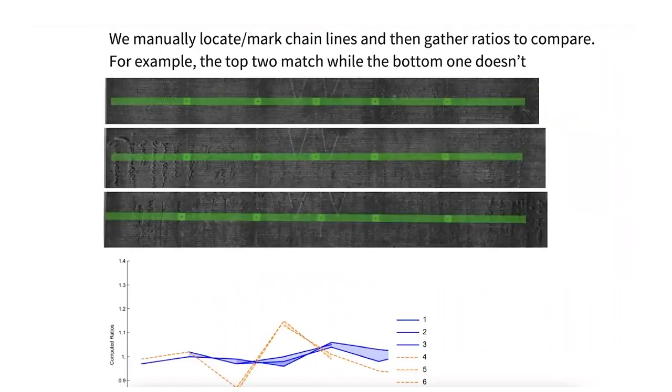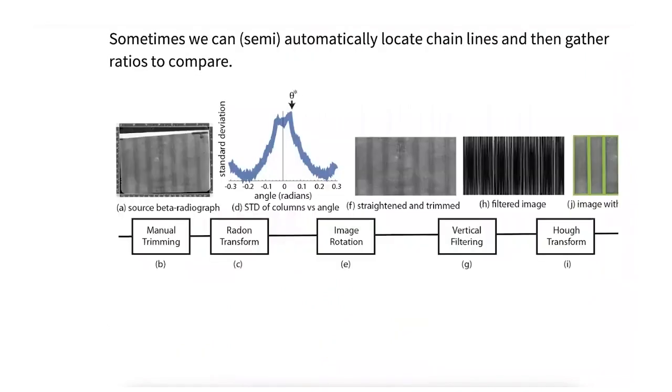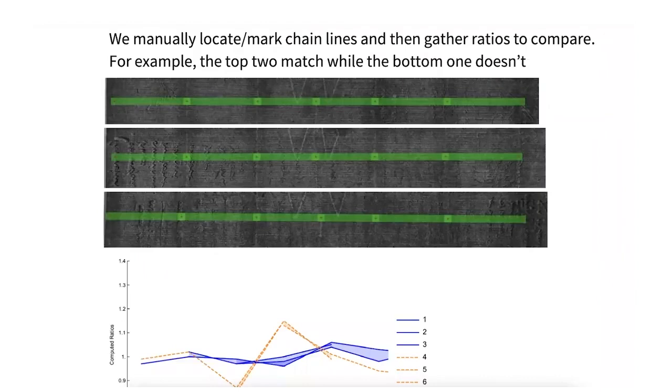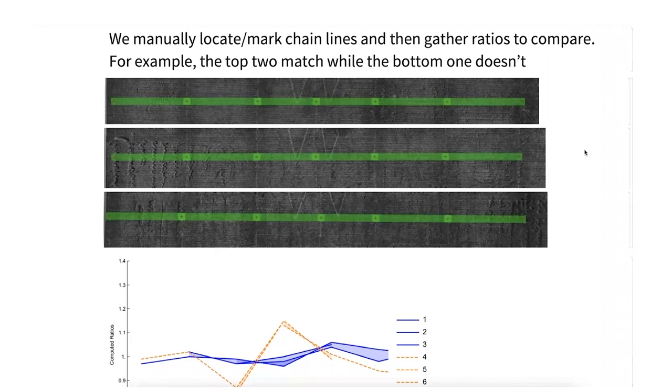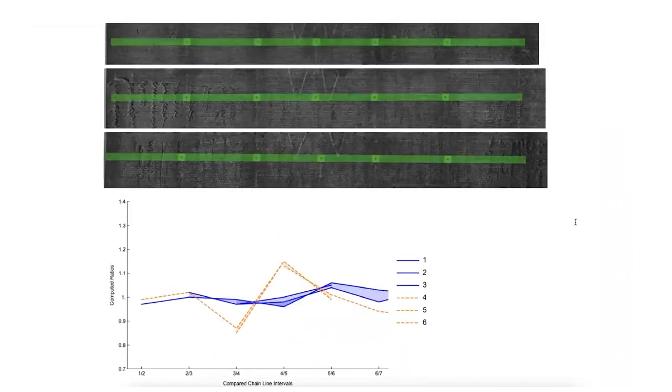We also have a little interface when the previous thing fails and you can just go in and mark it yourself. You can say, look, I put these little red plus signs down where the chain lines are, and then it automatically calculates the codes, which look something like this. And we've essentially represented the ratios of the successive lines in a code, like in a chart like this. And you can see that these particular six happen to group into those two. And then you make sure that the grouping you have from the watermarks is the same as the grouping from the chain lines.